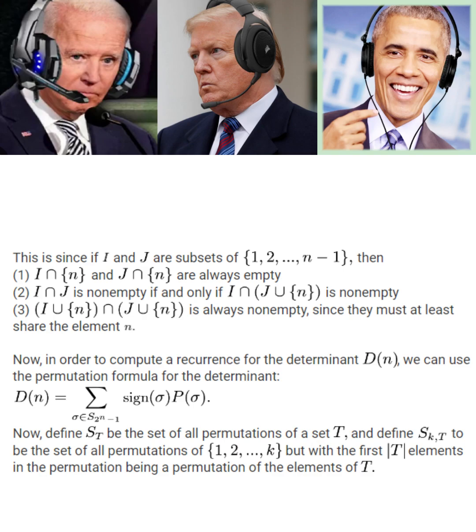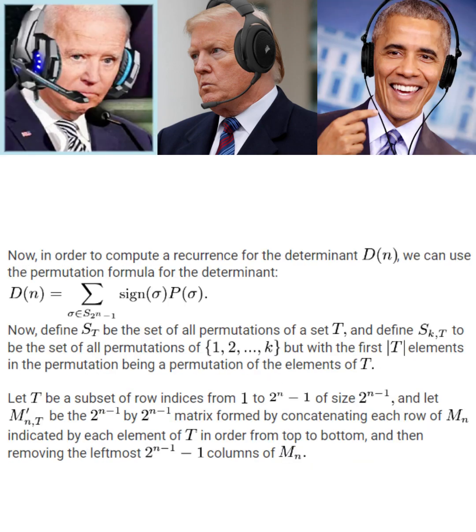All right, let's define a few more things here. Define S sub T to be the set of all permutations of a set T, and define S sub K comma T to be the set of all permutations of the set of the first K positive integers, but with the first Y elements in the permutation being a permutation of the elements of T, where Y is the cardinality of T. Then we can let T be a subset of row indices from 1 to 2 to the N minus 1 of size 2 to the N minus 1, and let M prime sub N comma T be the 2 to the N minus 1 by 2 to the N minus 1 matrix formed by concatenating each row of M sub N indicated by each element of T in order from top to bottom, and then removing the leftmost 2 to the N minus 1 minus 1 columns of M sub N.